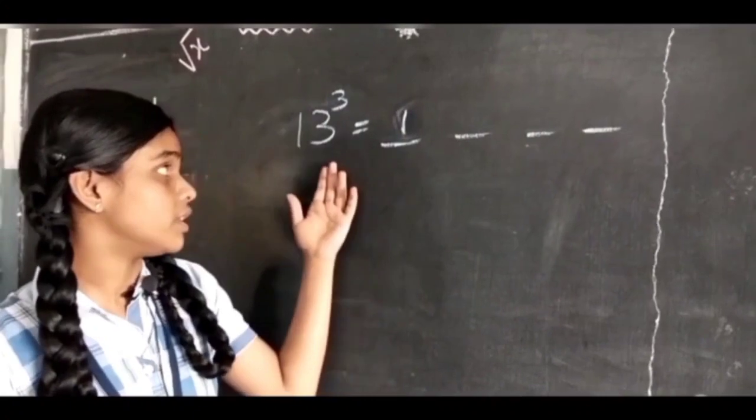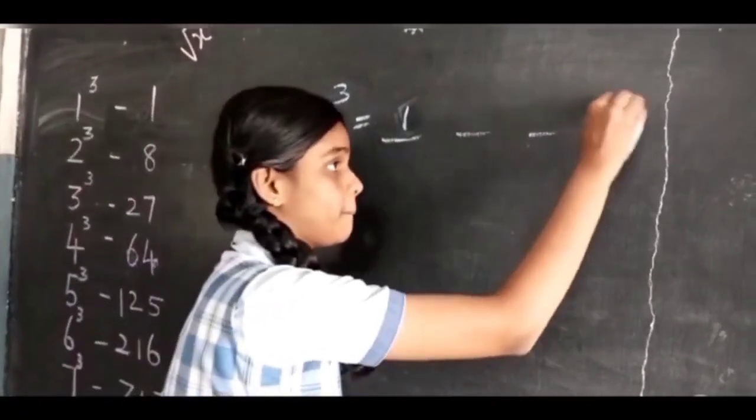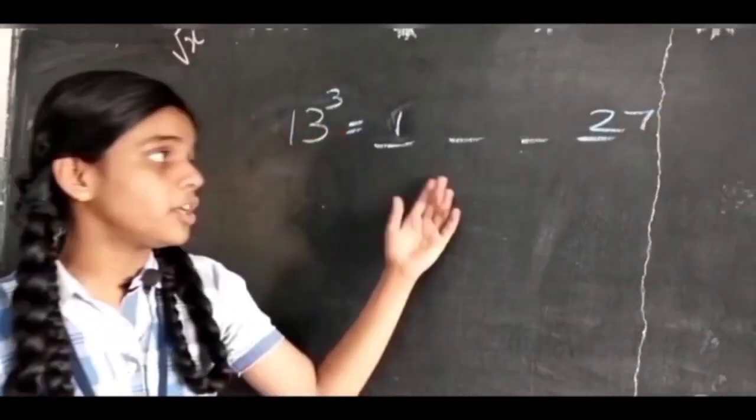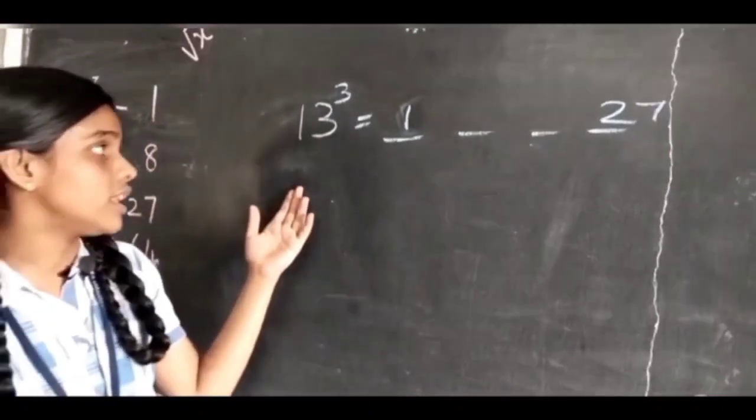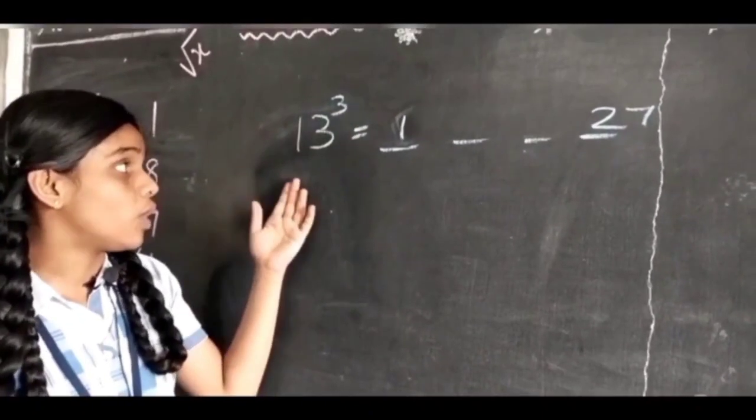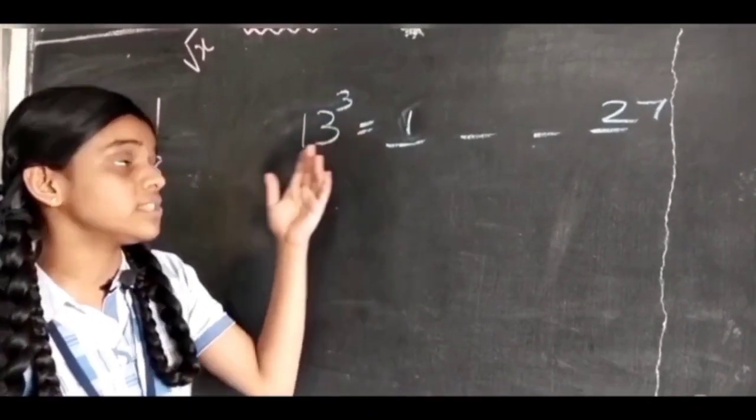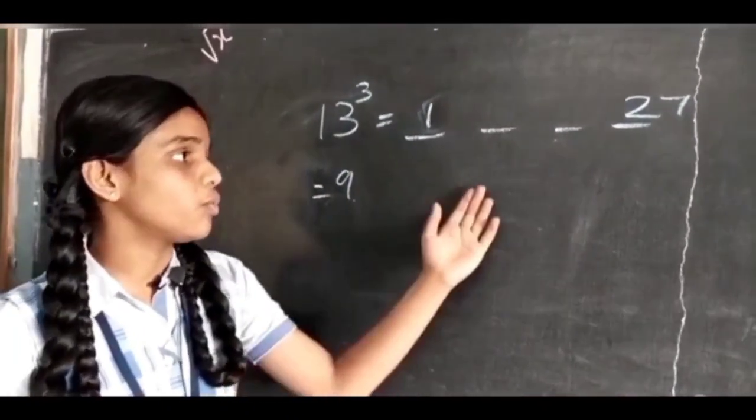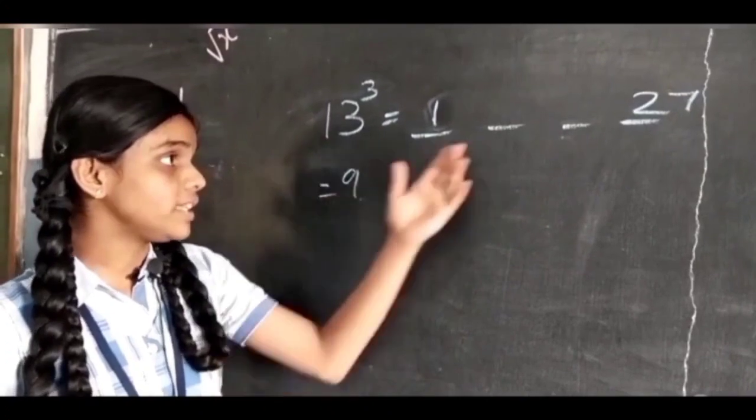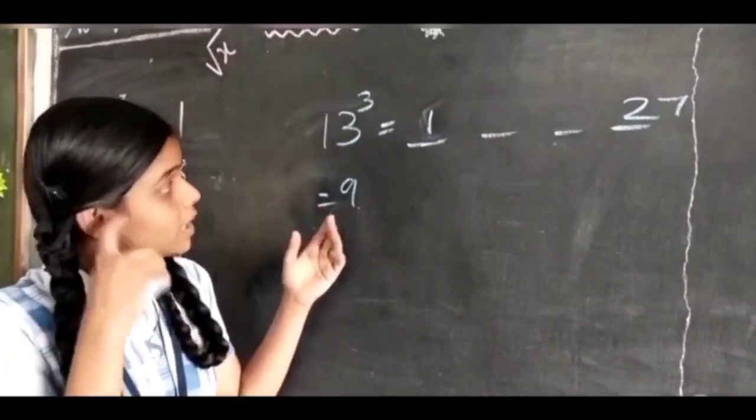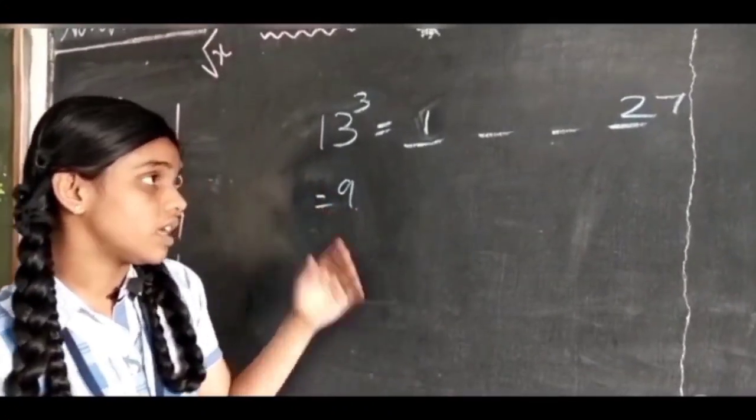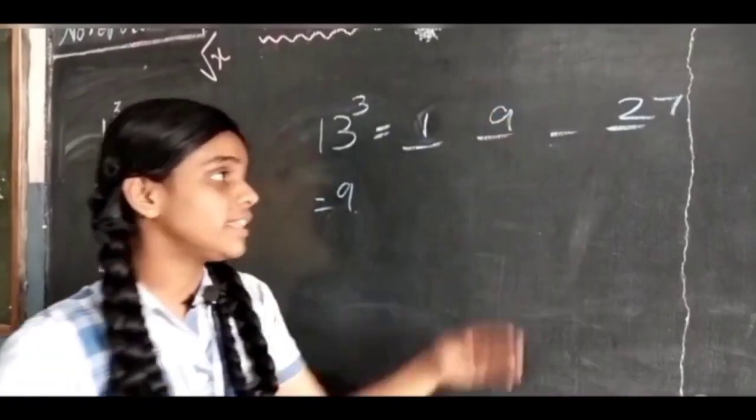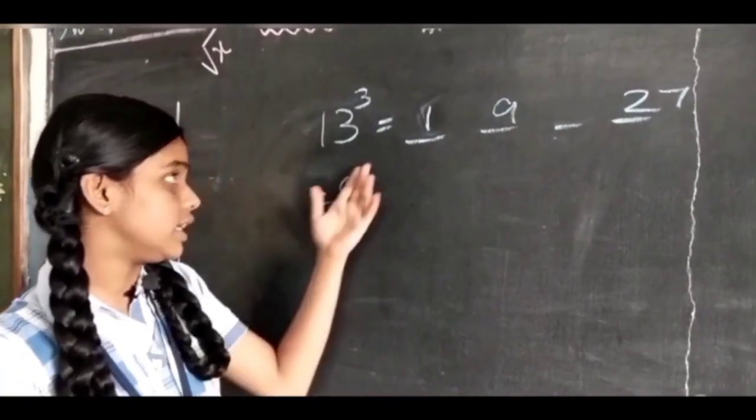For finding the middle two parts, we need to multiply all the numbers given over here. That is, 1 into 3 is 3, 3 into 3 gets 9. 9 is the common multiple for the middle terms. For finding the second part, we will multiply 9 with 1 - 9 ones are 9. For finding the next part, we need to multiply 9 with 3 - that is, 9 threes are 27.